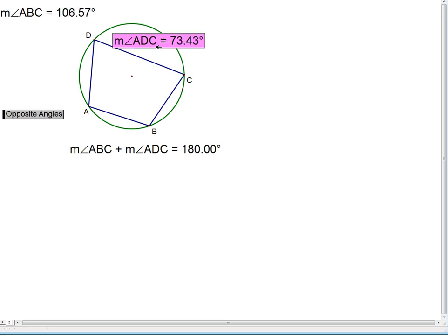When we add their measures together we get 180 degrees. The same could be true about angles A and C. Those two opposite angles would also equal 180 degrees.